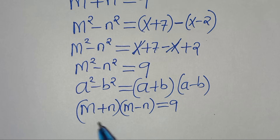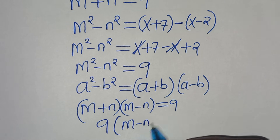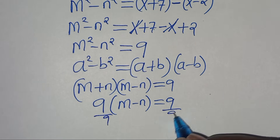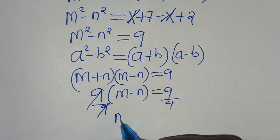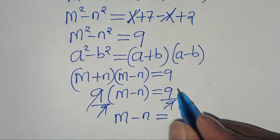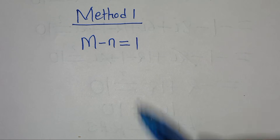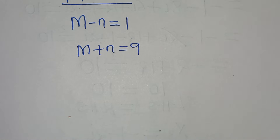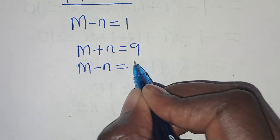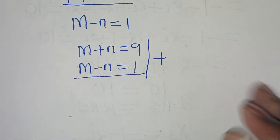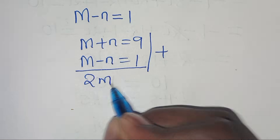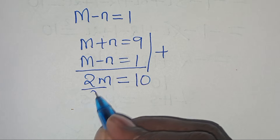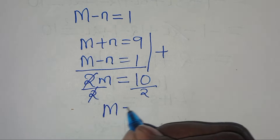We have m plus n equals 9, multiplied by m minus n equals 9. Dividing both sides by 9, we get m minus n equals 1. Now we form a system of two equations: m plus n equals 9, and m minus n equals 1. Adding these two equations: 2m equals 10.